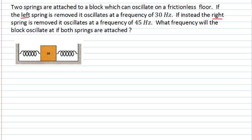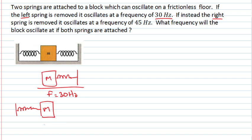We're told some information about the system. Firstly, if the spring on the left is removed, so that my mass only has the spring on the right attached to it, then my object will oscillate with a frequency of 30 Hz. We're also told that if the spring on the right is removed, and instead we've only got the spring on the left attached, then my mass can oscillate at a frequency of 45 Hz.